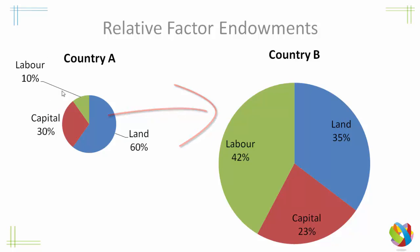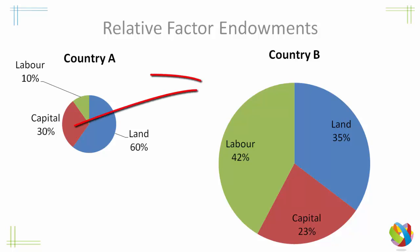So they predicted that Country A would export products using land to Country B. Country A also has a relative abundance of capital — thirty percent of its factors as opposed to twenty-three percent for Country B. So products that required a lot of capital input would be exported from Country A to Country B.